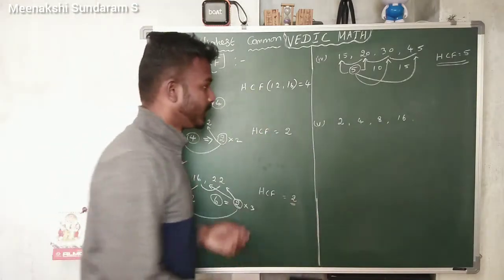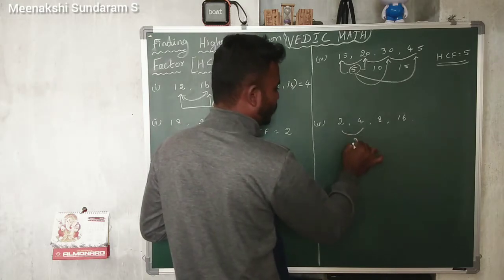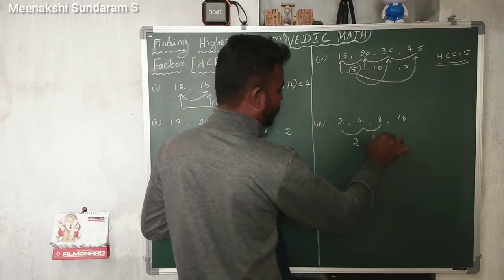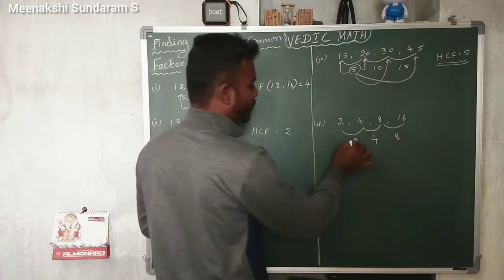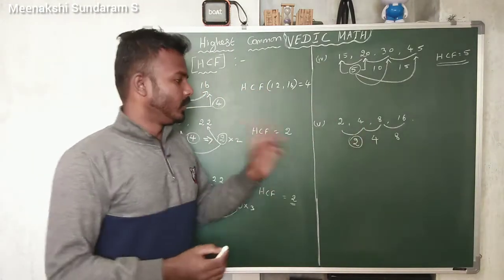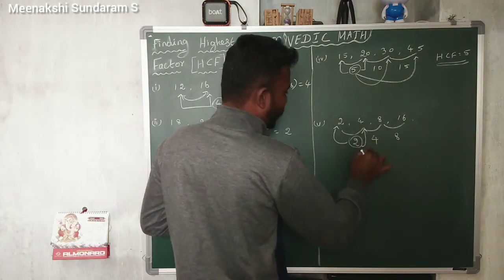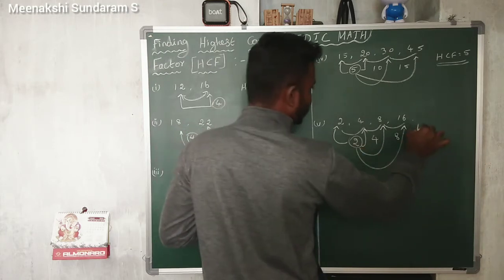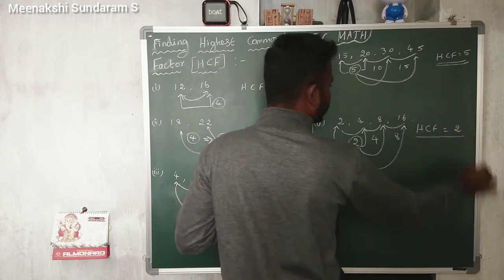We can go to the next example: 2, 4, 8, 16. Find the consecutive differences: the difference of 2 and 4 is 2, the difference of 4 and 8 is 4, the difference of 8 and 16 is 8. The smallest number among these differences is 2. Check: 2 divides 2, 2 divides 4, 2 divides 8, and 2 divides 16. So the HCF of these numbers is 2.